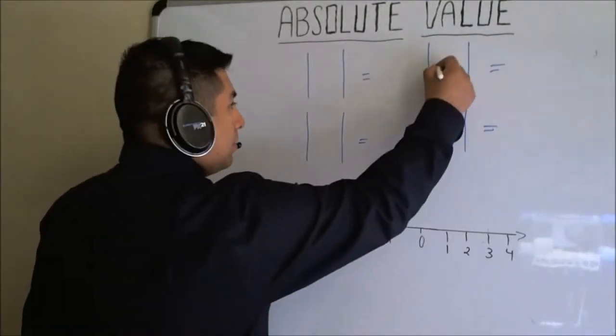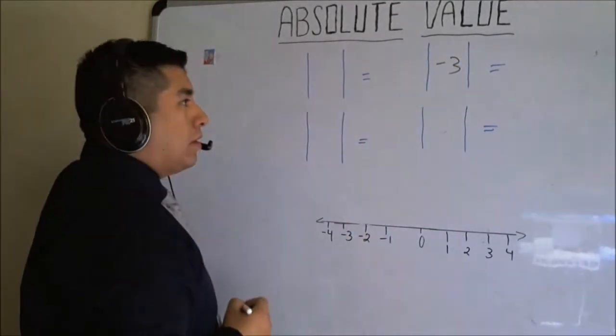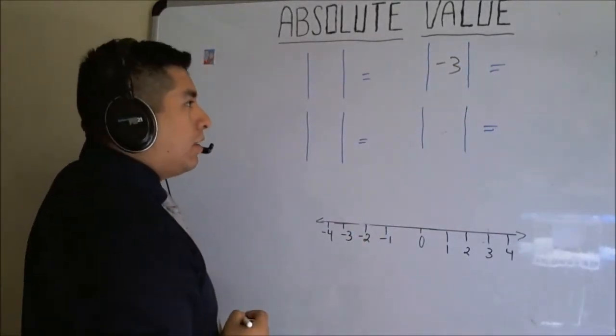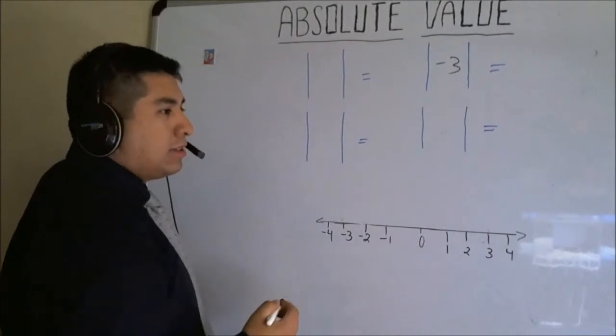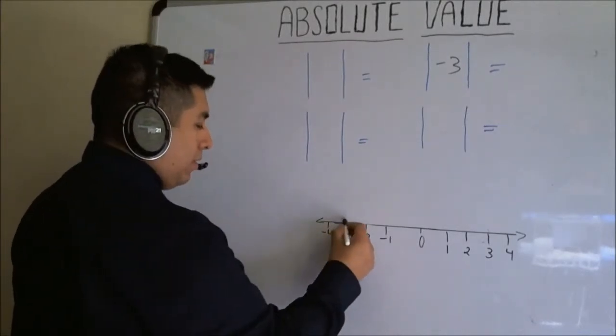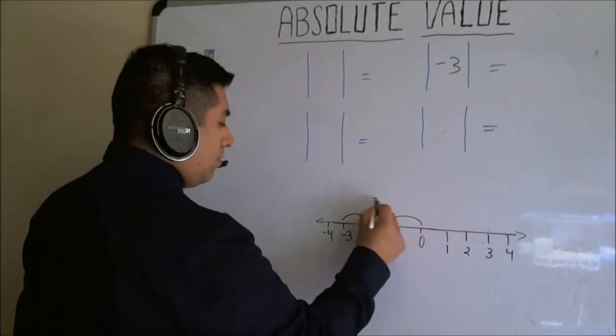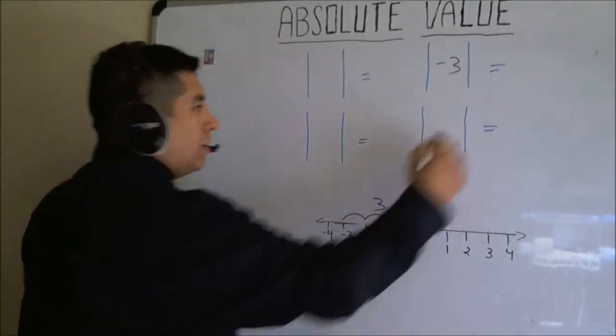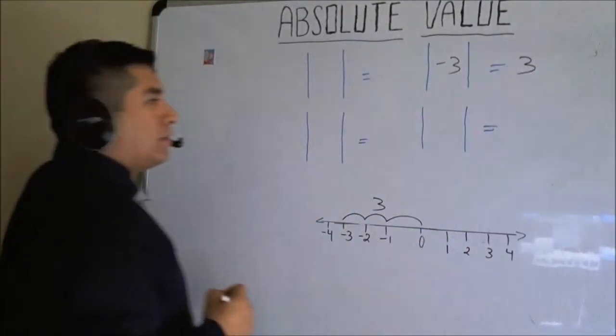For example, negative three. What's the absolute value of negative three? Well, what's the distance between negative three and zero? One, two, three. Three units. Therefore, the answer is three.